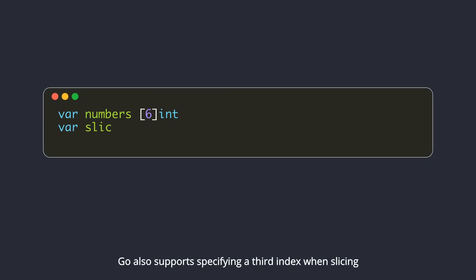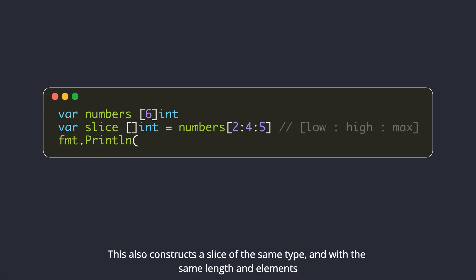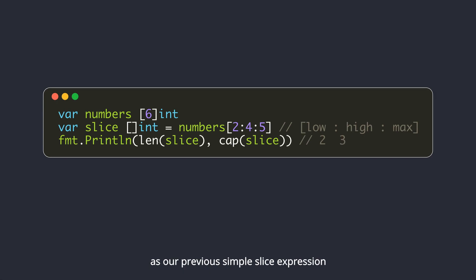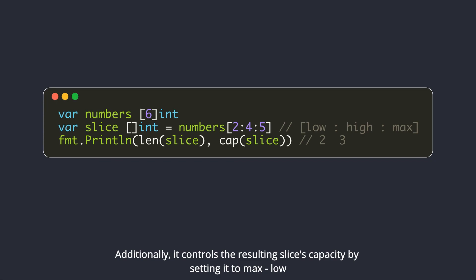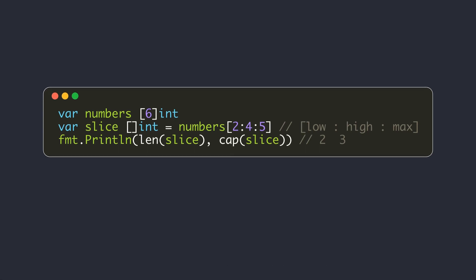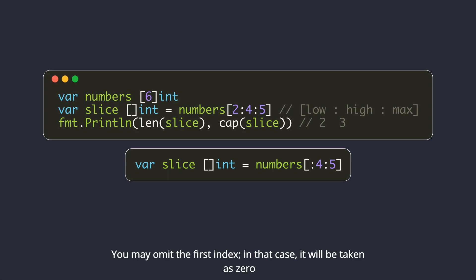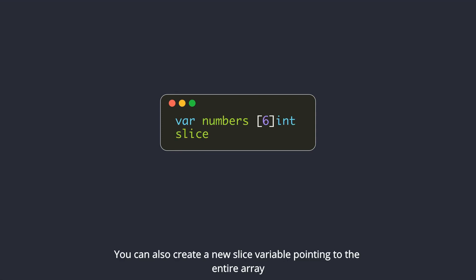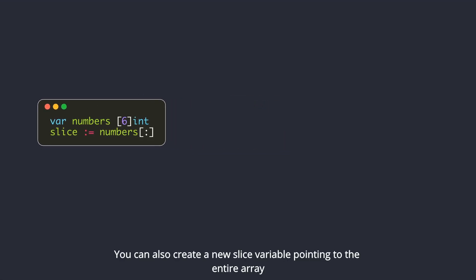Go also supports specifying a third index when slicing. This constructs a slice of the same type, with the same length and elements as a simple slice expression. Additionally, it controls the resulting slice's capacity by setting it to max minus low. This has some uses which we will discuss later. You may omit the first index, in which case it will be taken as zero.